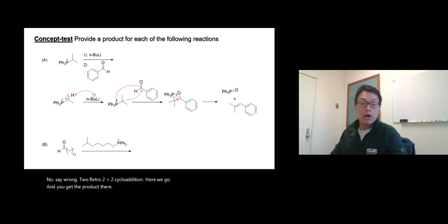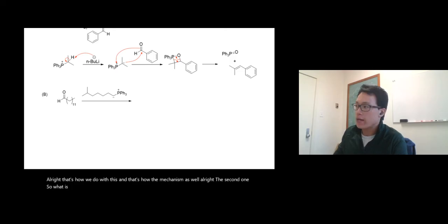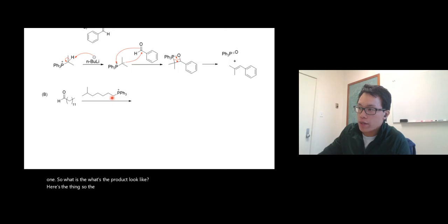That's how we do this—that's all in the mechanism as well. For the second one, the nucleophile is the carbon right here. It will attack the carbonyl carbon and the oxygen will use the two pi electrons in the double bond to attack the phosphorus.